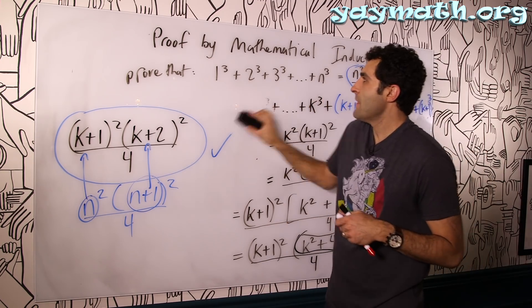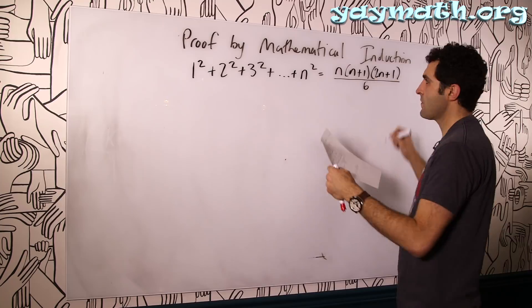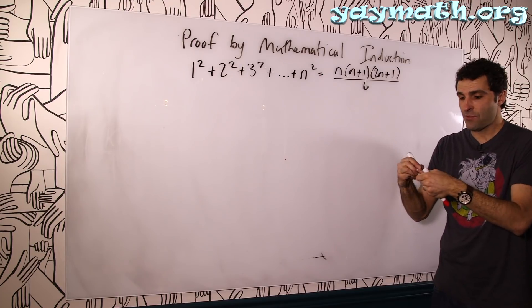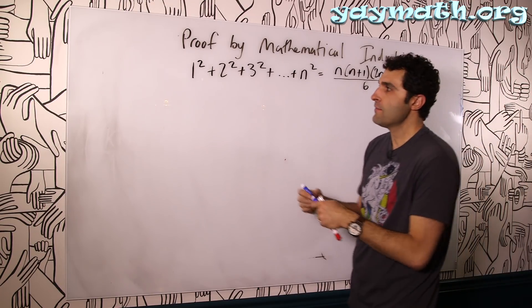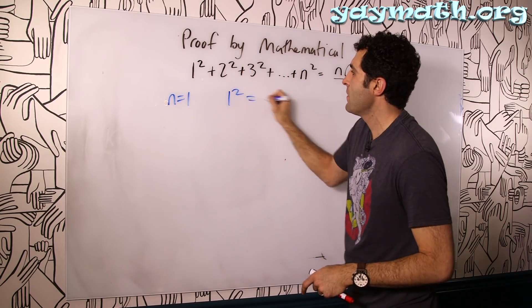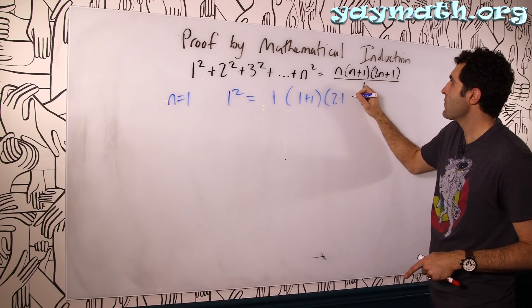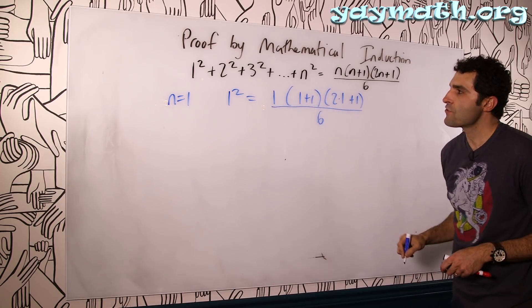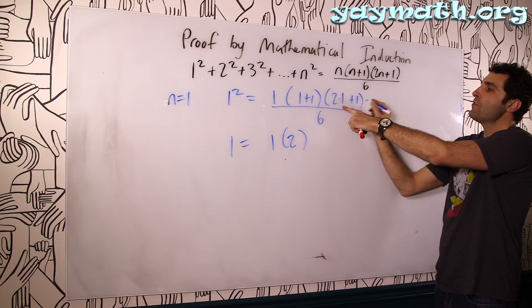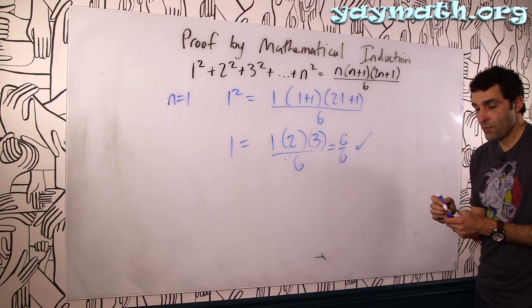Let's do one more example. We're going to prove this statement true for n equals 1 first. If n equals 1, the left side is just 1 squared. That should equal 1 times (1 plus 1) times (2 times 1 plus 1), all over 6. That's 1 times 2 times 3 over 6, which is 6 over 6 — that's 1. And the left side is 1 squared, which is 1. So it is true for n equals 1.